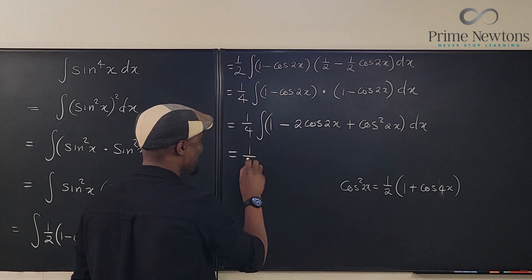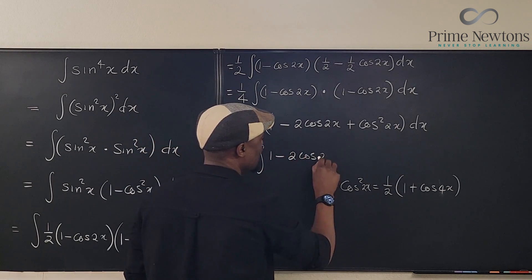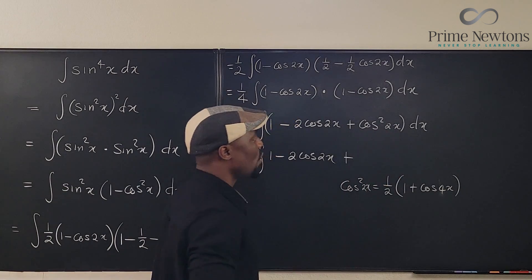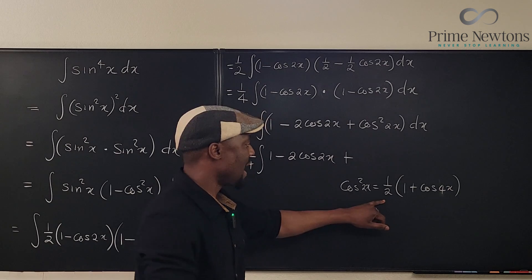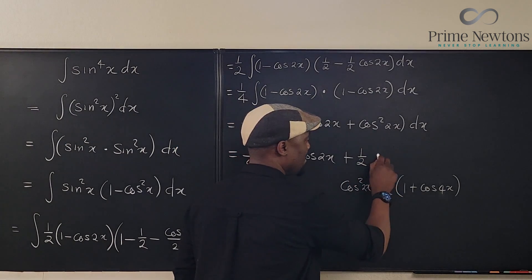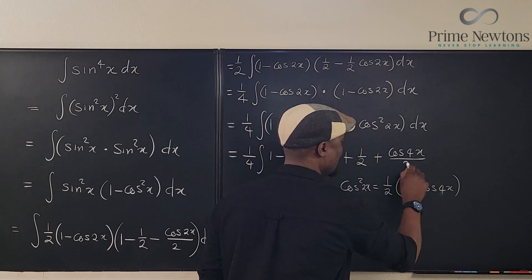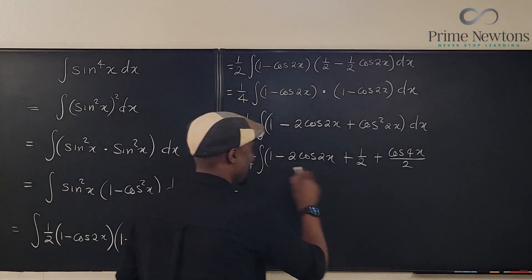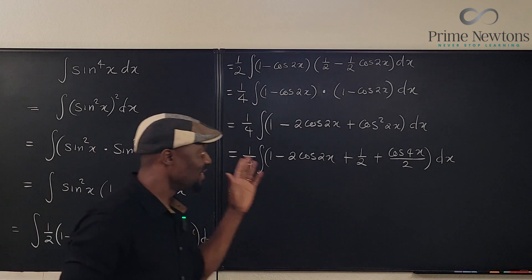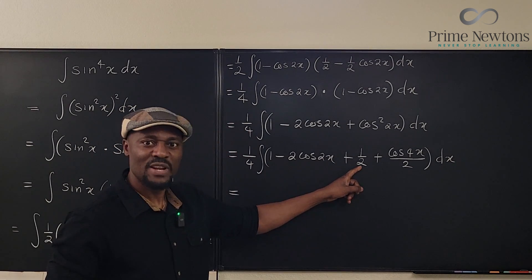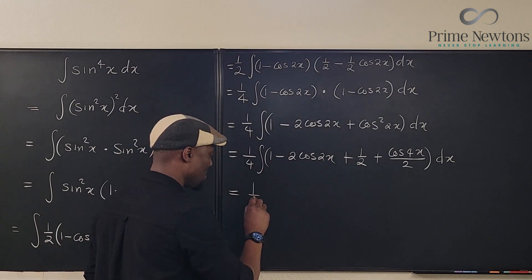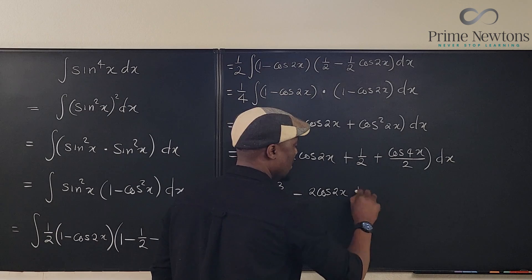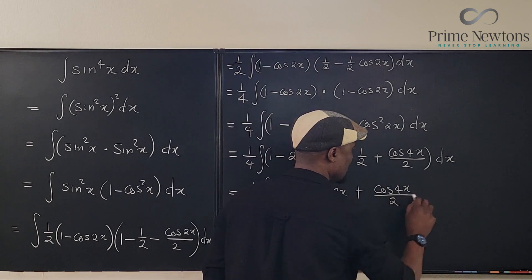Going back, this is (1/4) times the integral of 1 − 2cos2x plus ½(1 + cos4x) dx. We distribute the ½ to get ½ + cos4x/2. Combining the constants: 1 + ½ = 3/2. So this becomes (1/4) times the integral of (3/2 − 2cos2x + cos4x/2) dx.